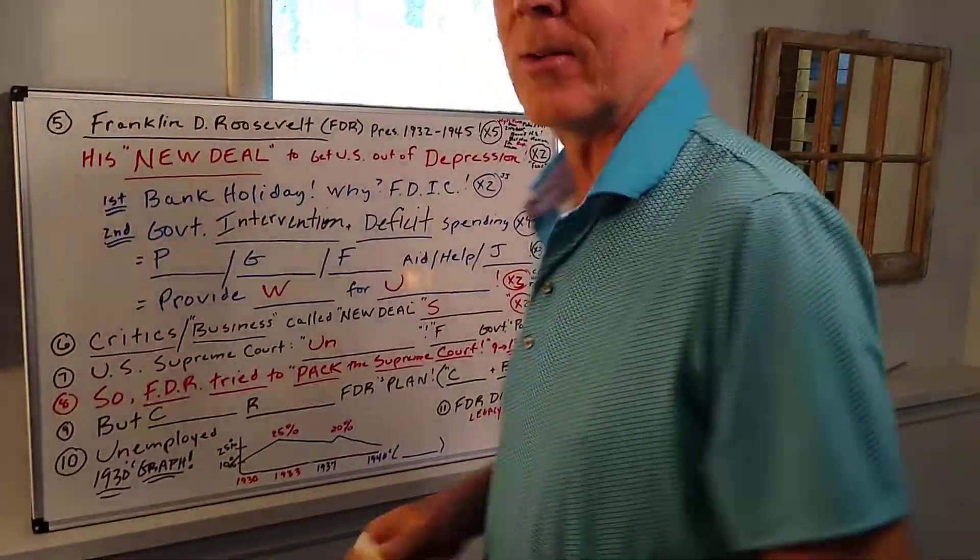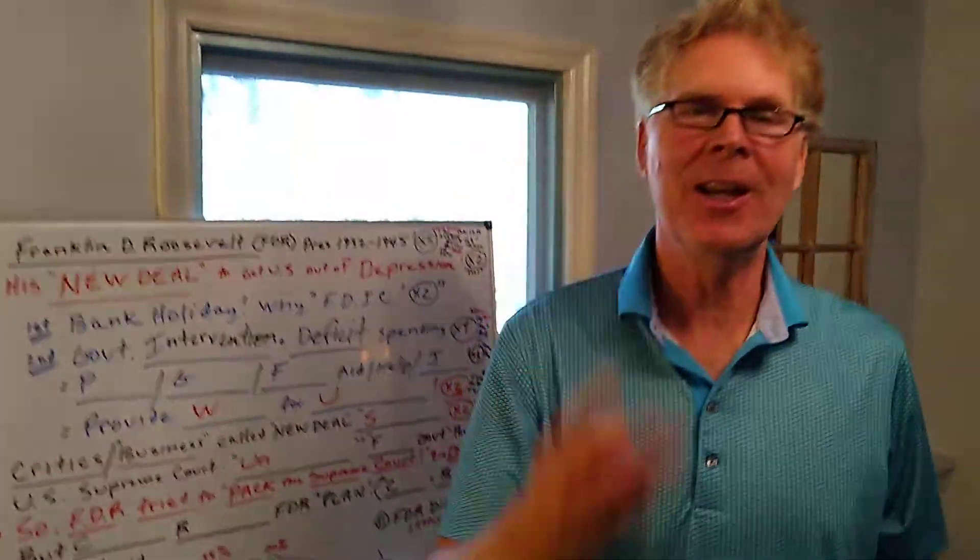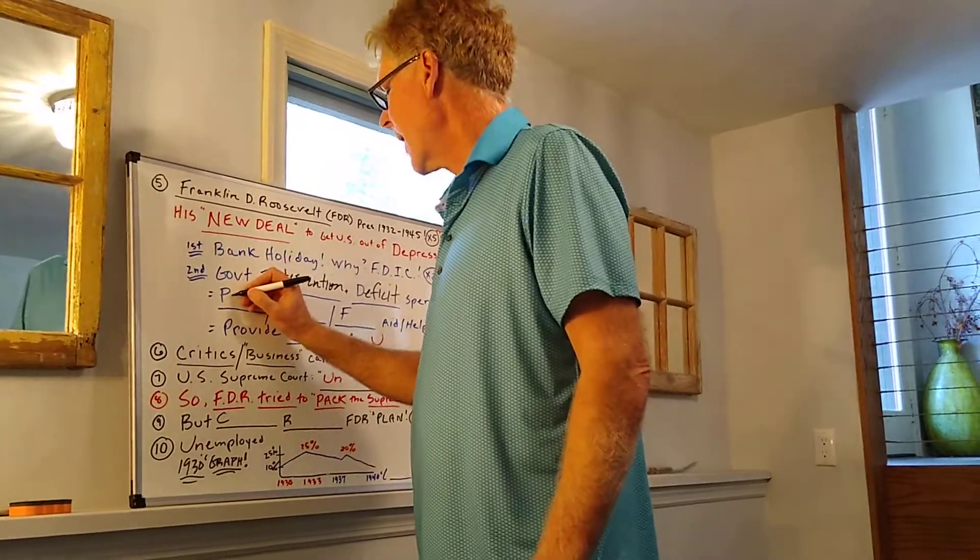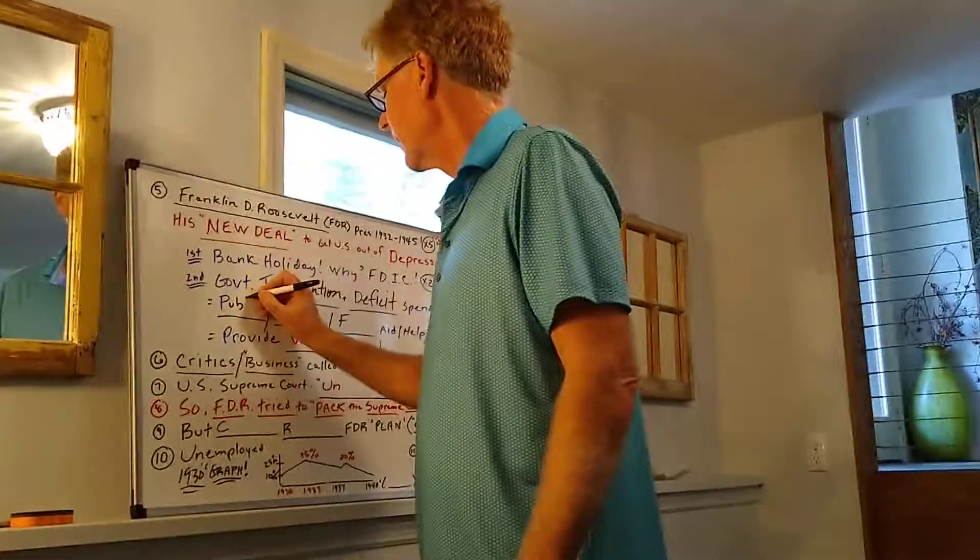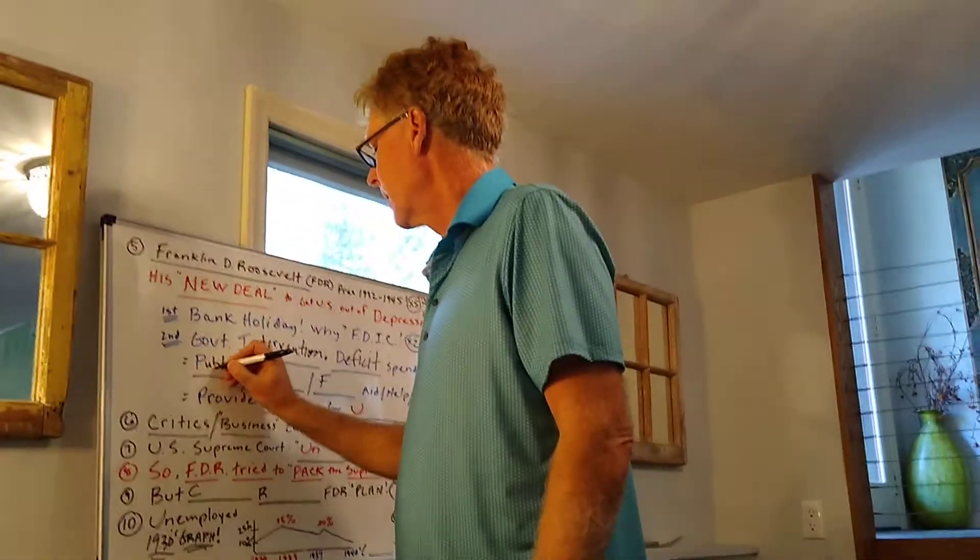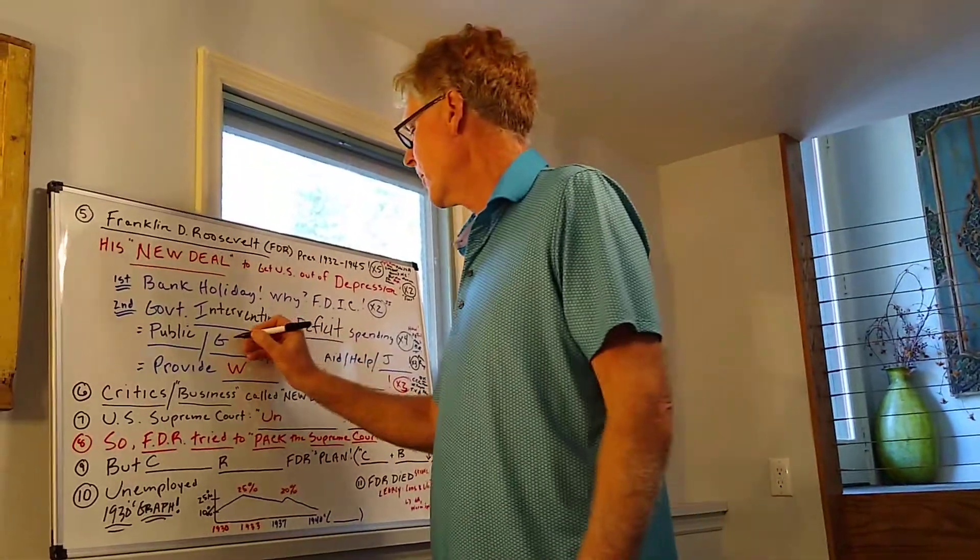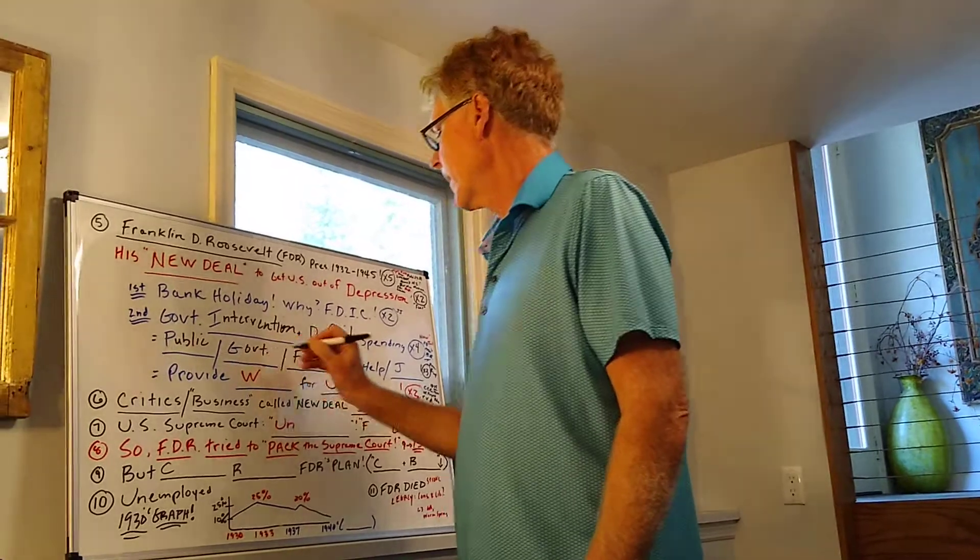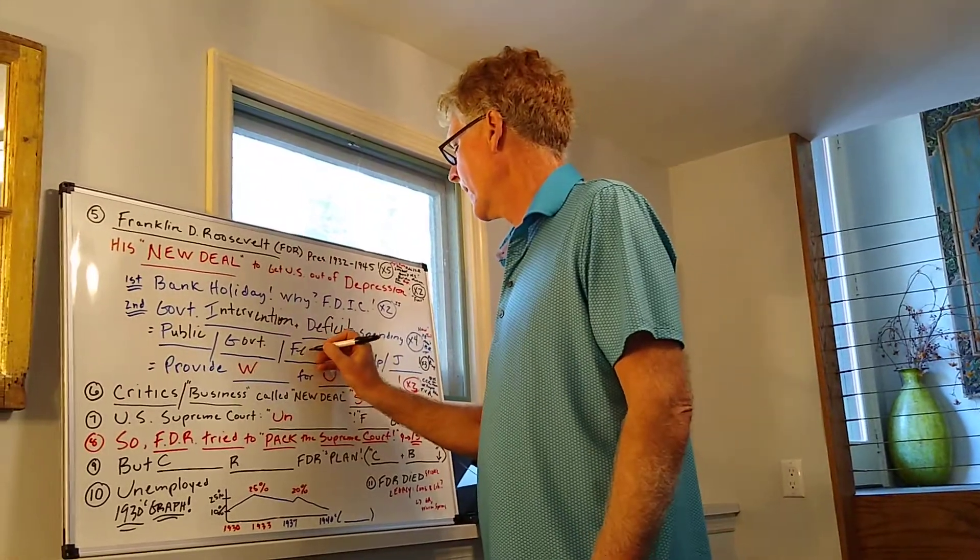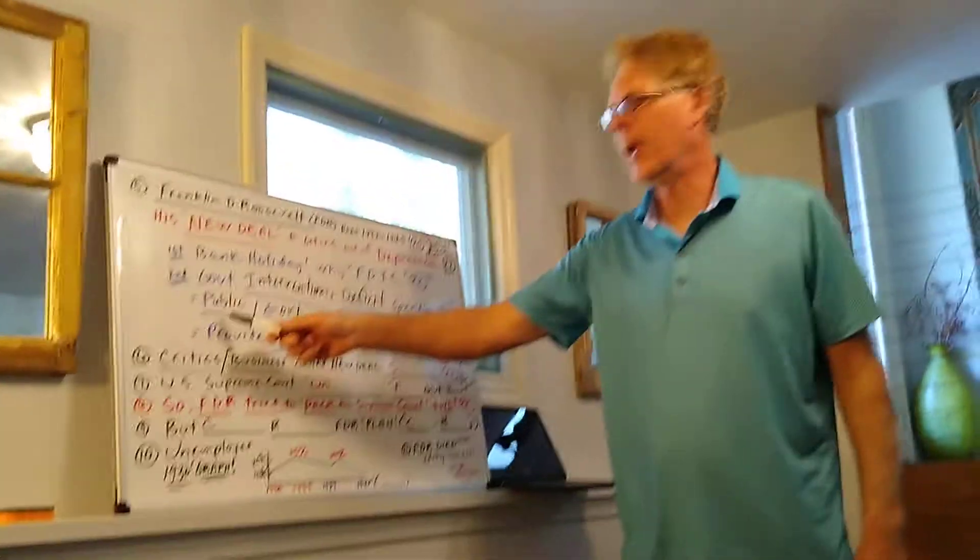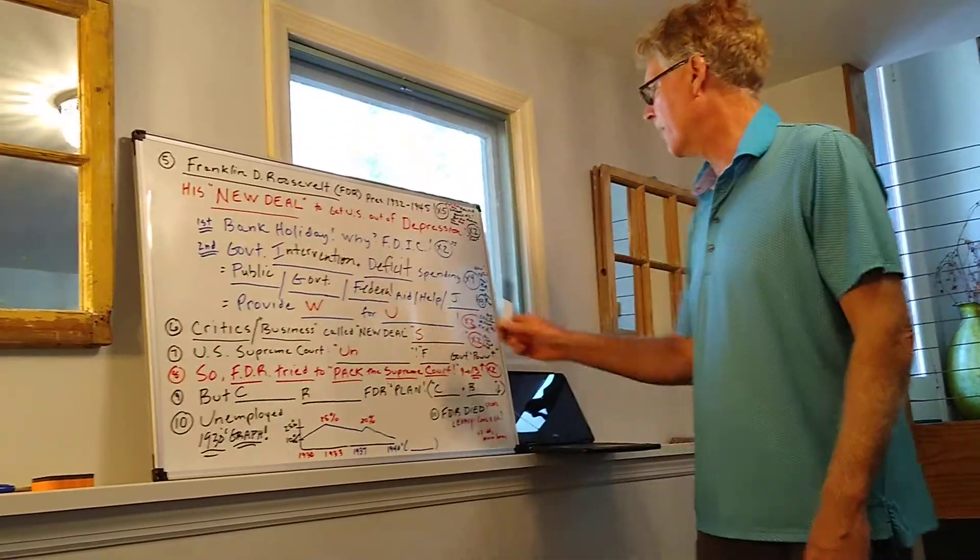Here we are, we are now in episode three. I had to take a little break. Okay, so government intervention. Basically on the test, that's called public. Public is government. You go to a public school, that's a government school. Government also means federal aid. So here we go, you're getting public aid, government aid, federal aid help.